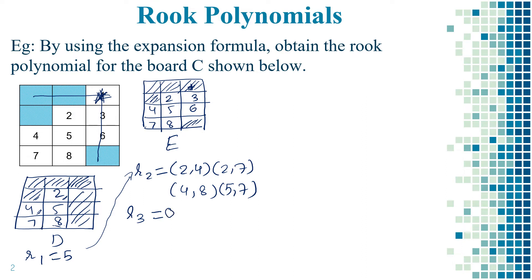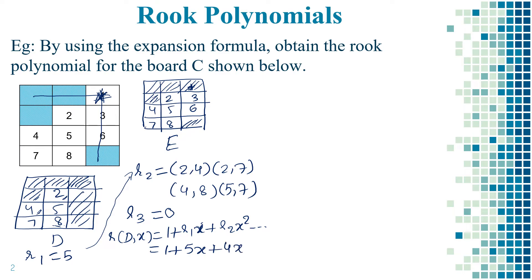Therefore, the rook polynomial r(D, x) is written using the generalized formula: 1 + r1·x + r2·x² + ... which gives us 1 + 5x + 4x². Since r3 = 0, there is no x³ term. This is the rook polynomial for Board D.